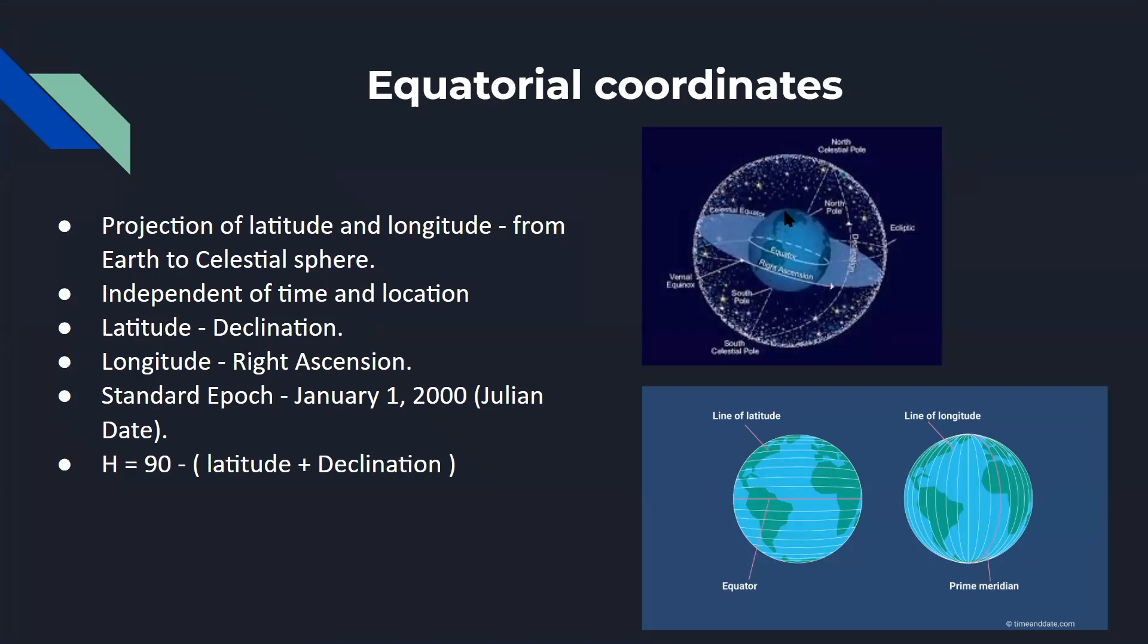So likewise, they have created an imaginary sphere called celestial sphere, which surrounds the Earth. And for finding any object in that celestial sphere, they have made a coordinate system called equatorial coordinate system.